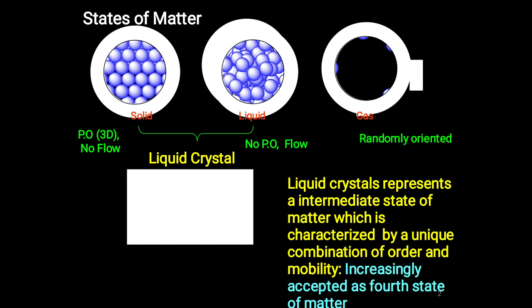Liquid crystals lie in between the properties of solids and liquids. Liquid crystals may be defined as the distinct state of matter in which the degree of molecular ordering — that is positional and orientational order — lies between the ordered anisotropy of the crystalline state and the completely disordered isotropic liquid state.